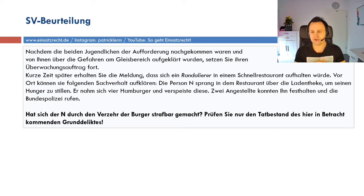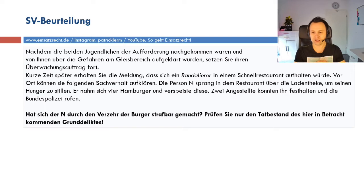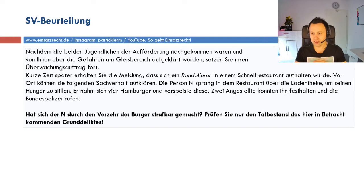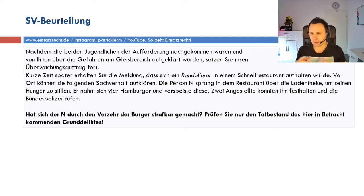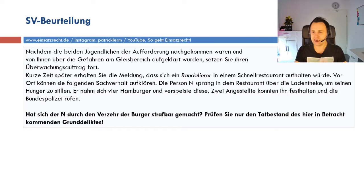Die Fallfrage lautet: Hat sich N durch den Verzehr der Burger strafbar gemacht? Wir sollen nur den Tatbestand des in Betracht kommenden Grunddeliktes prüfen. Das ist eine schöne Strafbarkeitsprüfung, die in der Regel leichter fällt als Maßnahmenprüfungen, wo ich immer wieder zwischen präventiv und repressiv unterscheiden muss. Bei Strafbarkeitsprüfungen bin ich klassisch im repressiven Bereich und muss das TAS-Schema beherrschen: Tatbestandsmäßigkeit, Rechtswidrigkeit und Schuld.